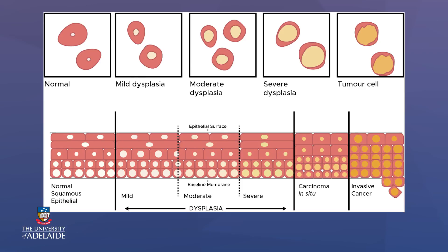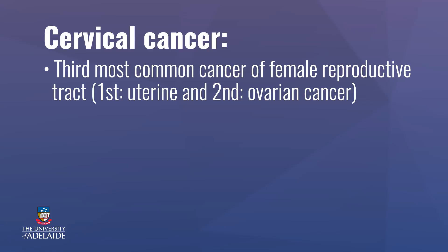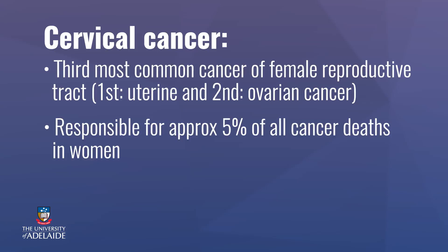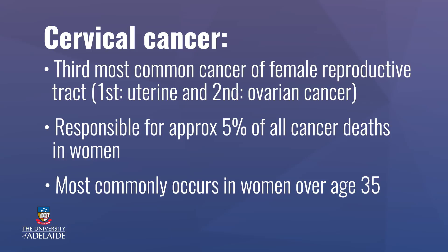Often there is a potential that this uncontrolled growth can spread to other parts of the body. Cervical cancer is the third most common cancer of the female reproductive tract. It's not as common as cancer of the endometrial lining of the uterus or ovarian cancer, but it is sadly responsible for around 5% of all cancer deaths in women. It most commonly occurs in women over the age of 35.